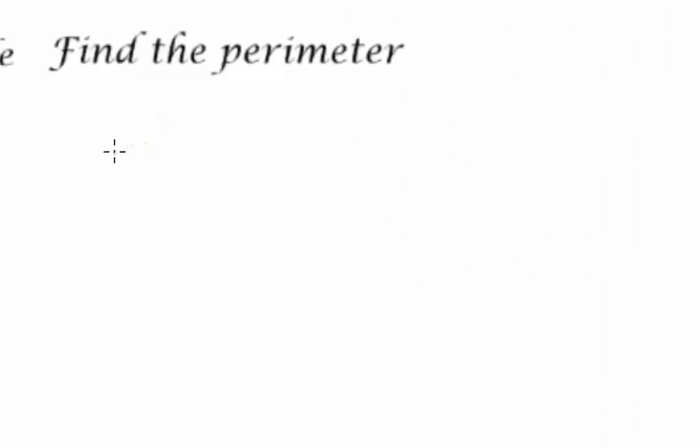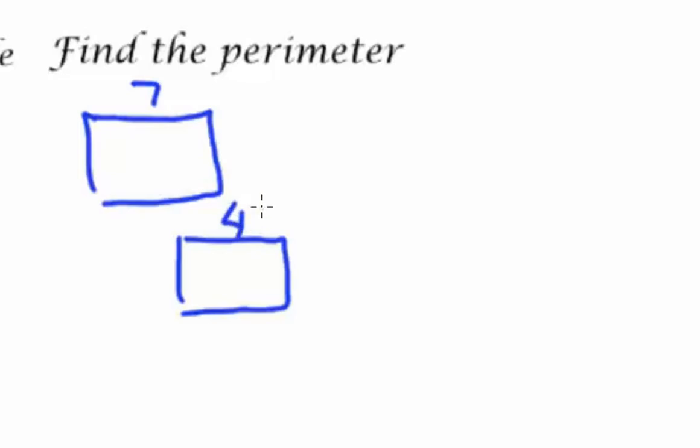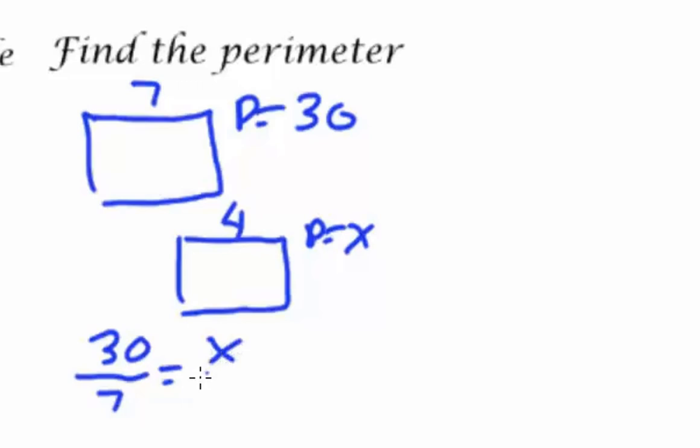And the last problem, I can expand similarity to finding perimeter. Let's say that I have one rectangle with the side 7, another rectangle with one of the sides 4. And I happen to know that the big rectangle's perimeter is 30. So can I set up ratios to find the perimeter of my small rectangle? And we'll call it x for now. So 30, the perimeter I know, over 7, the side, equals x, the perimeter I don't know, over 4, the side of the small rectangle that I do know. As I cross multiply, 120 equals 7x. And I can finish up by dividing both sides by 7. So x equals 17.1.